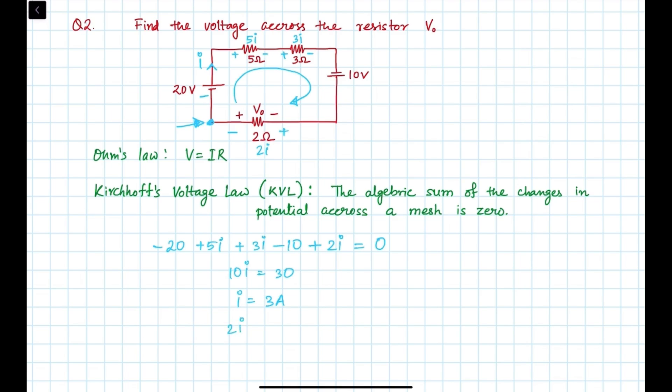Now you see, we have to find V0 which is in opposite polarity to the 2I. So if 2I is 6 volts, then V0 will be minus 6 volts. This is our final answer.